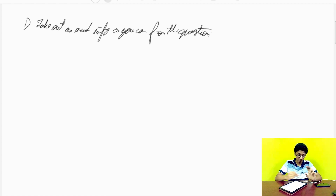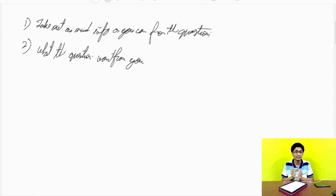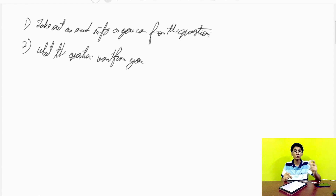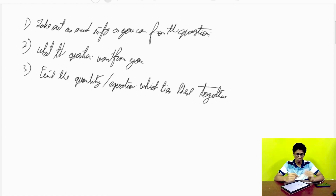After taking out the information, understand what the question wants from you. Then you need to realize what set of equations can tie these two things together. You are not supposed to think randomly in every direction — think in a particular direction because you have less time. Often there might be an intermediate variable, like time relating two distances. If you go through these three points for every question, there shouldn't be any question you cannot solve.